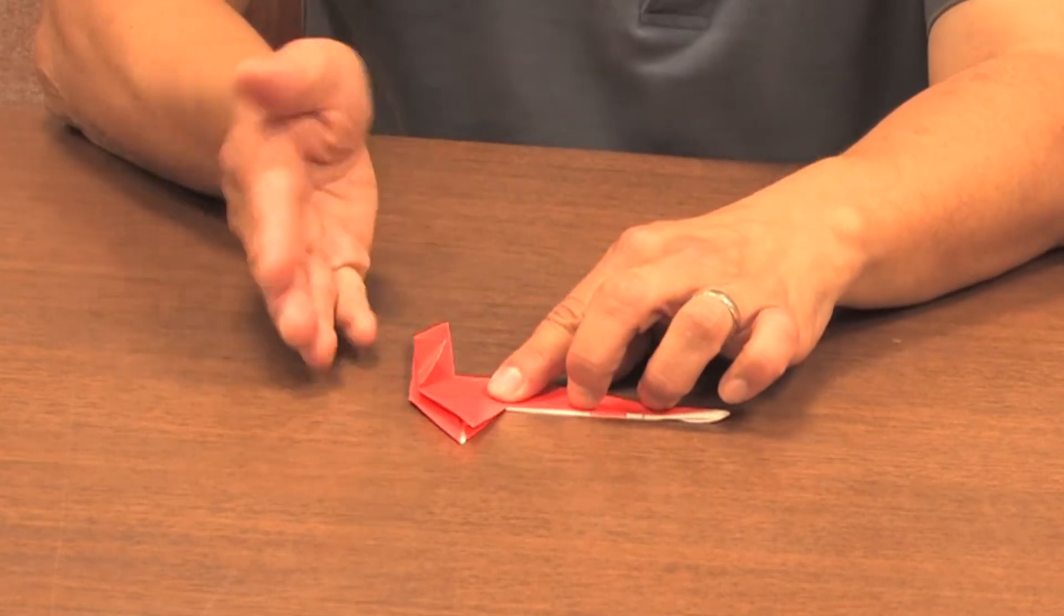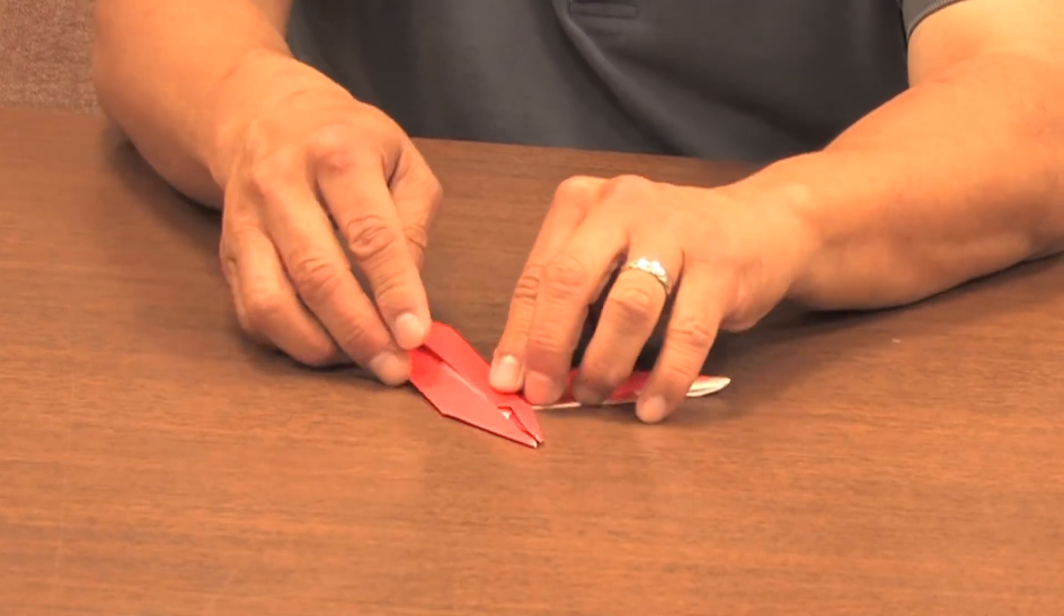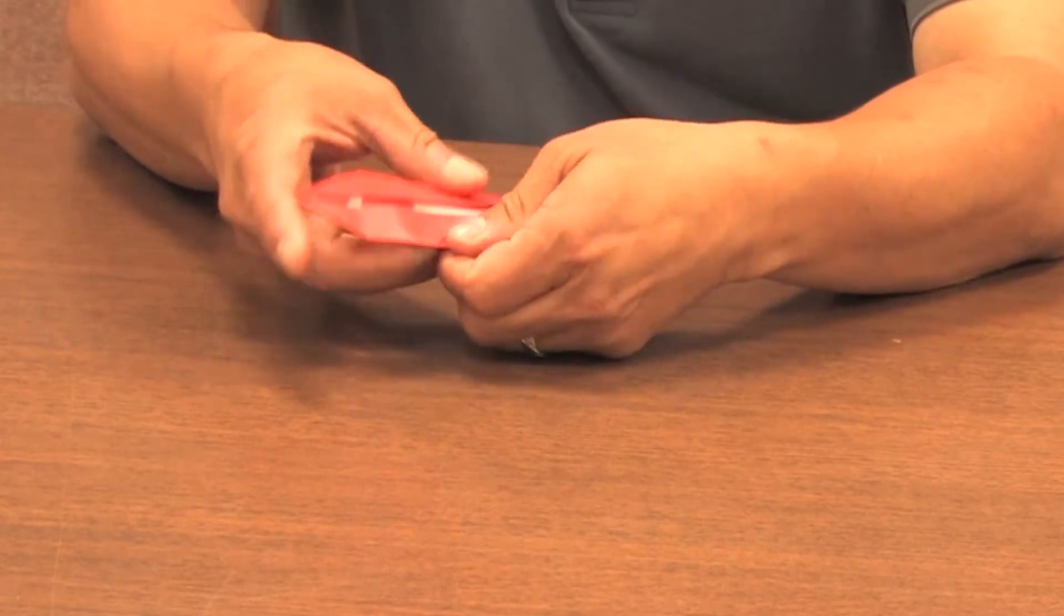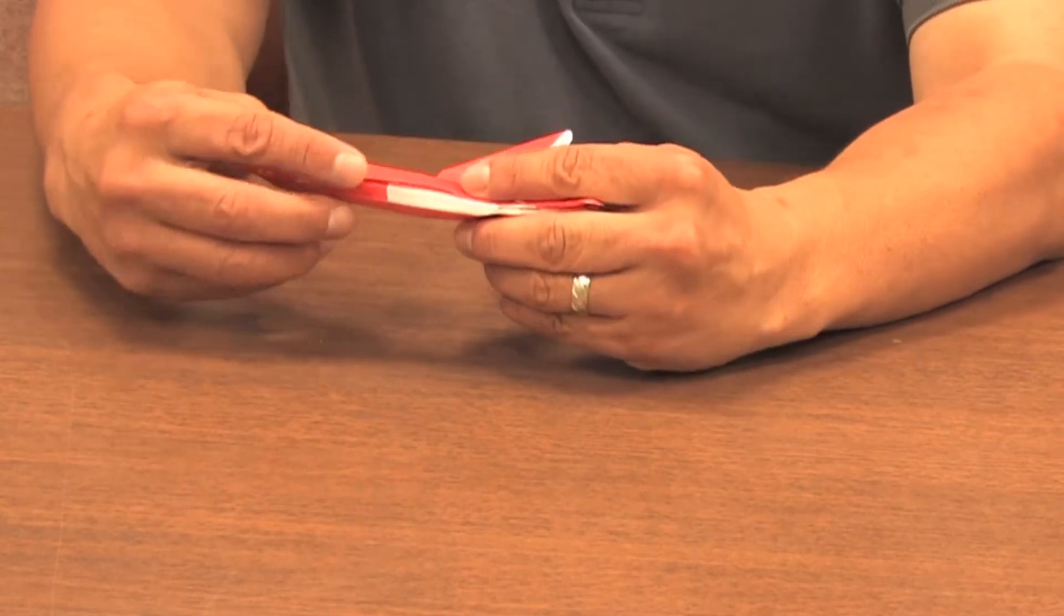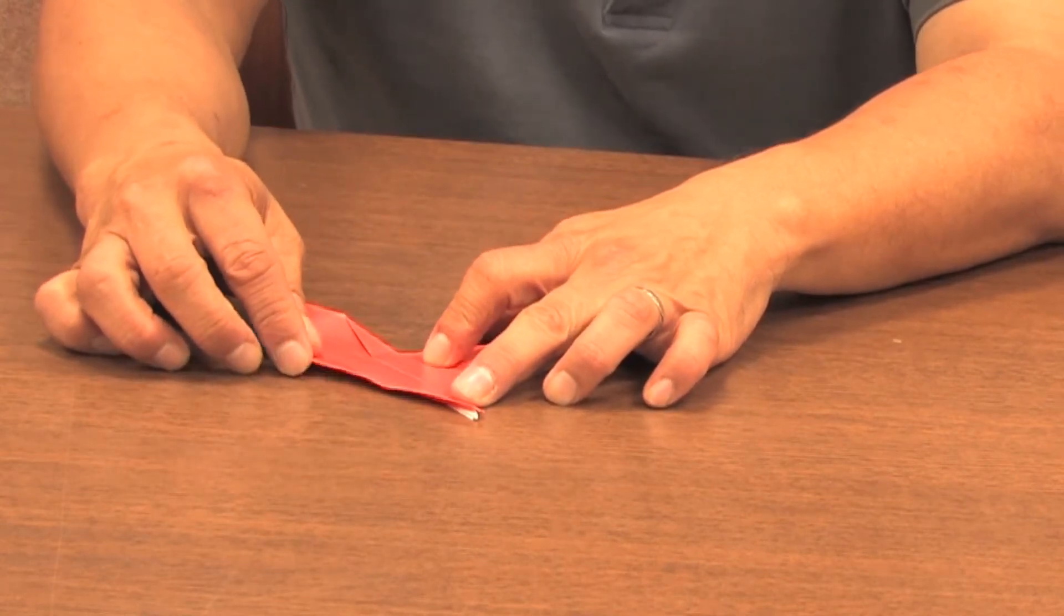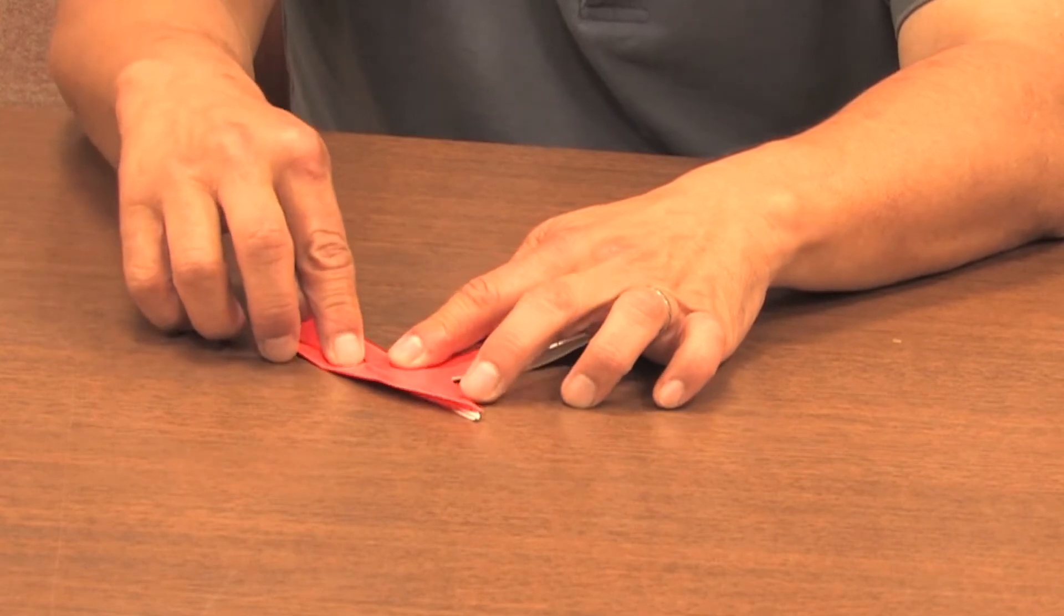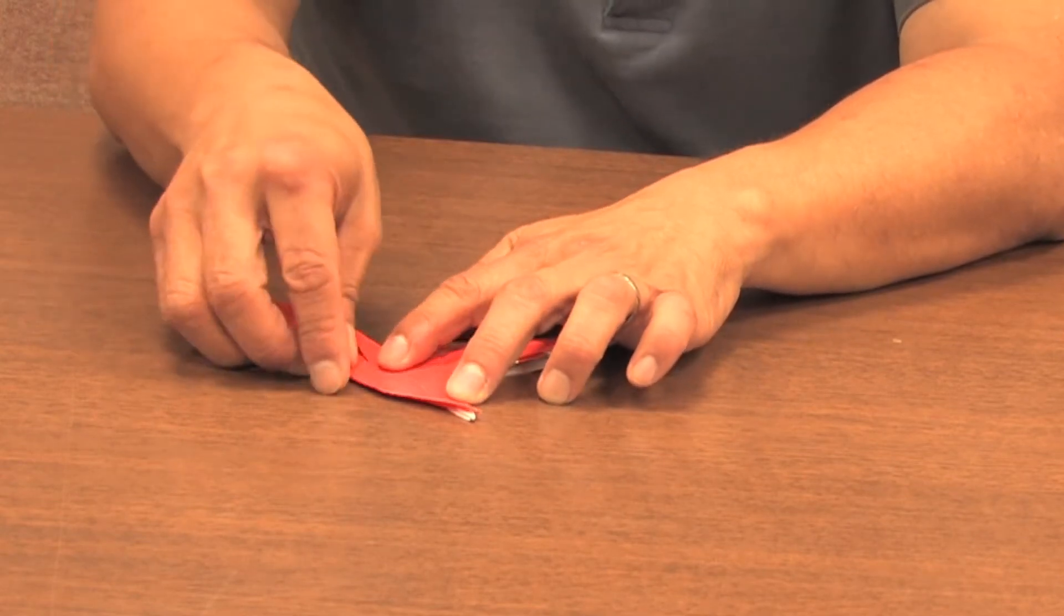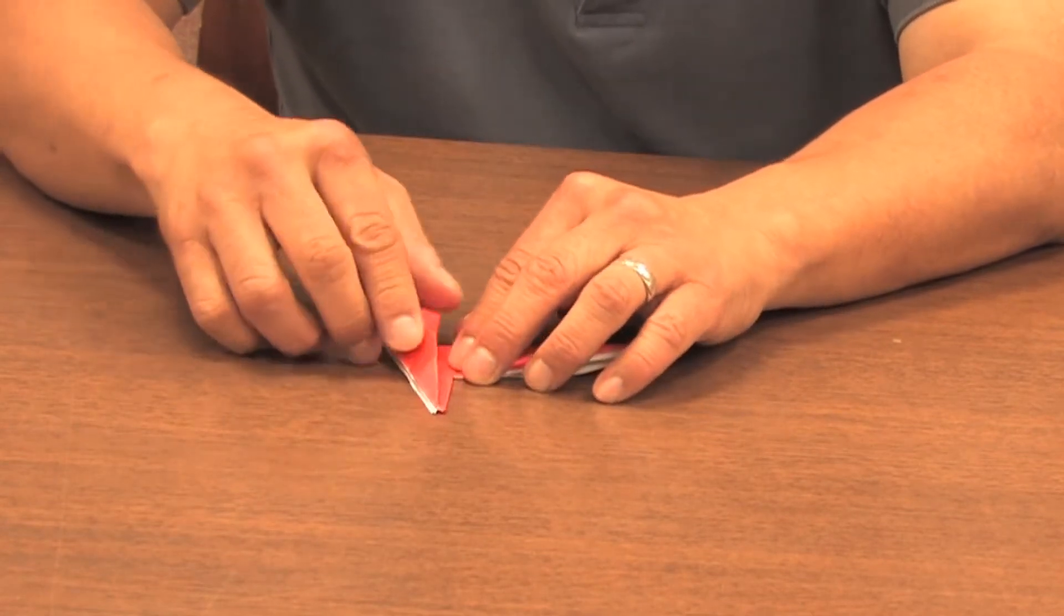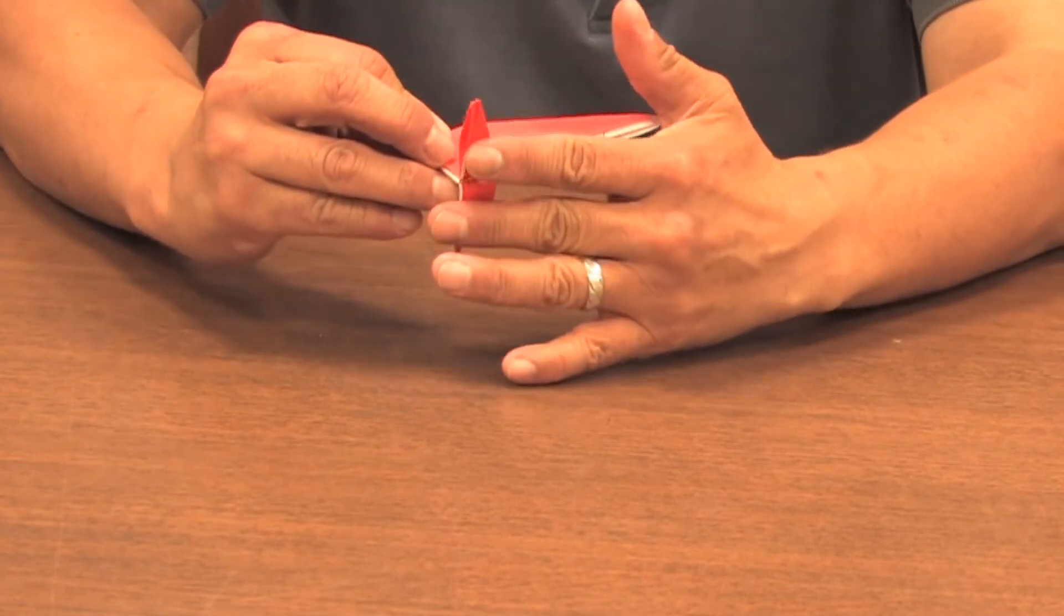And then we're going to fold it back one more time like this on both sides. So to get there, we're here. We fold this part back to the middle and then back over one more time on both sides. So this is going to be the front two legs.